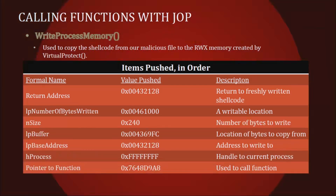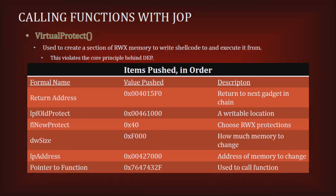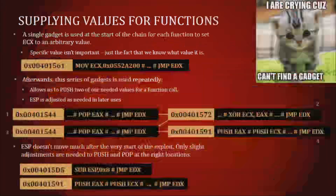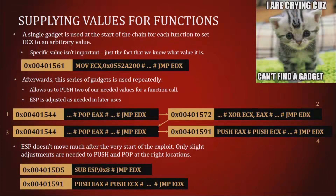WriteProcessMemory is a bit more challenging — there's no direct pointer to it in the binary, unlike VirtualProtect. Since we already dereferenced VirtualProtect, we can analyze the DLL, do some hex math, and use the offset to reach WriteProcessMemory. We set ECX to a known value for XOR operations, pop a value into EAX, perform XOR, and push the resulting values onto the stack.